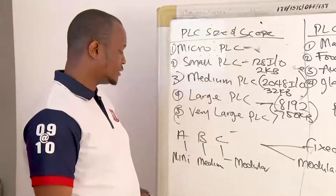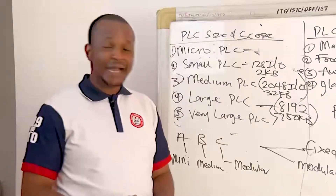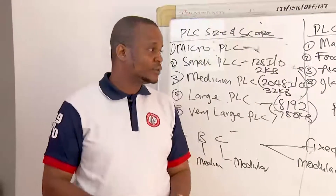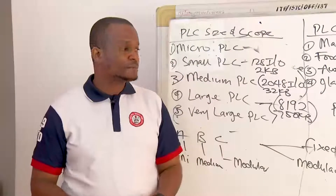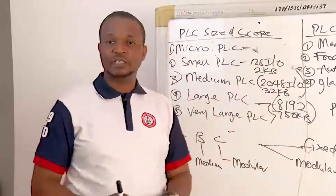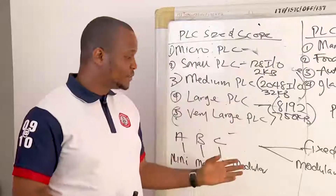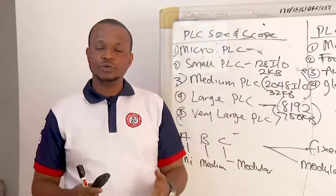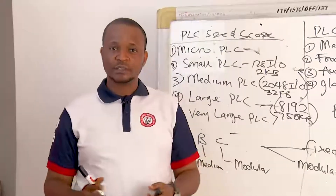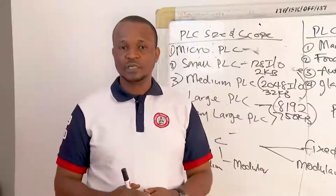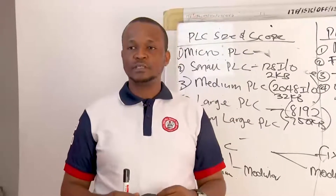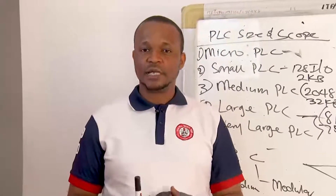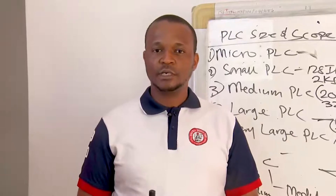An example of a micro PLC could be the Allen Bradley MicroLogix. A mini PLC could be the SLC 500, as I earlier mentioned. Modular PLCs are always in modules — any PLC you see that has modules. In the next video, I'll be showing you a modular PLC, an Allen Bradley SLC 500, because our next video will be on PLC hardware. At this junction, we are ending the Introduction to PLC, and in the next class we will continue from where we stopped. Thank you, I'll see you next time.